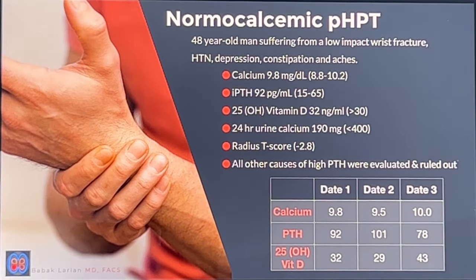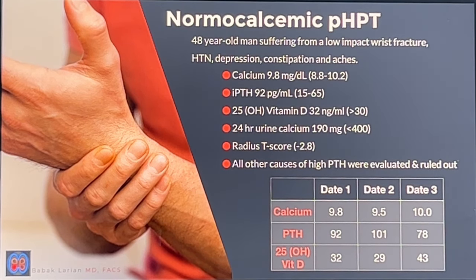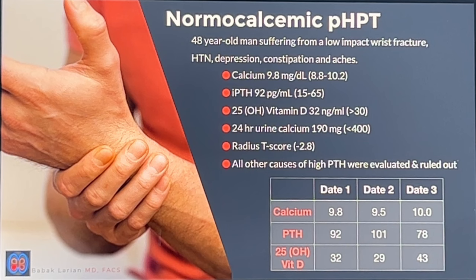The next group is normal calcium hyperparathyroidism — patients who have normal calcium levels on routine labs but start to develop symptoms and are often ignored. Most people affected by hyperparathyroidism are women in middle age, going through perimenopausal changes. They're told it's midlife hormonal changes, or boxed into categories like anxiety, depression, chronic fatigue syndrome, or fibromyalgia — conditions that aren't necessarily curable — when they may actually have normal calcium and hyperparathyroidism.